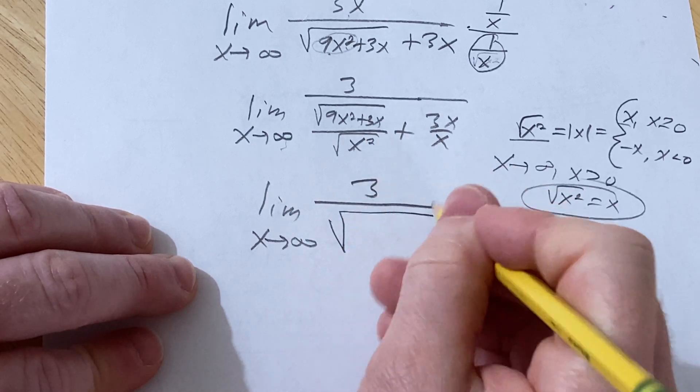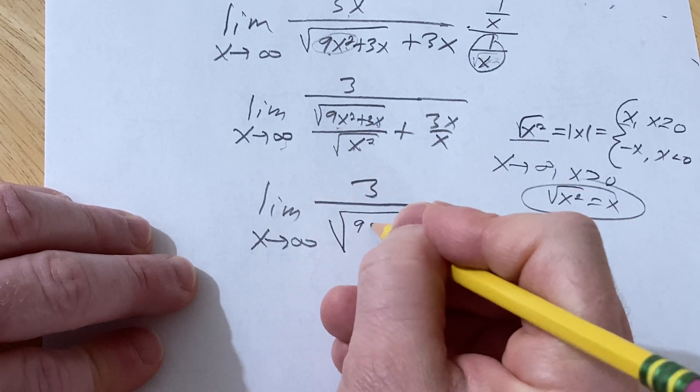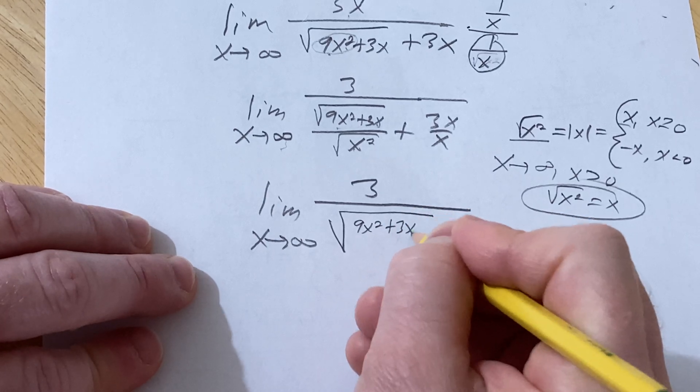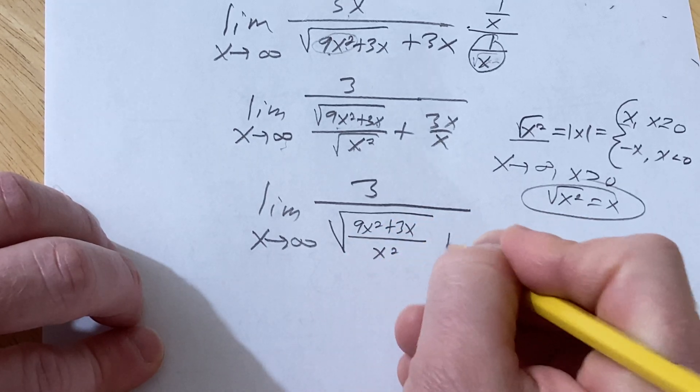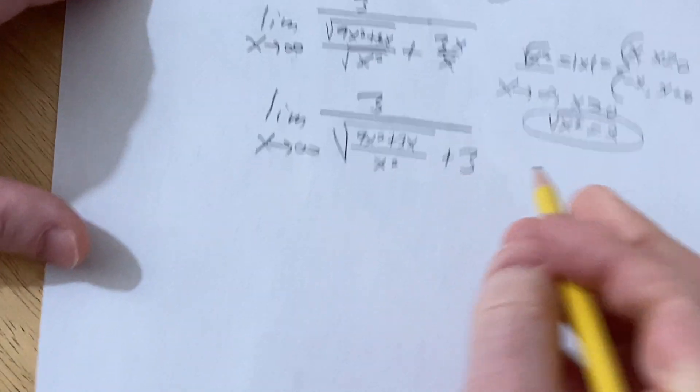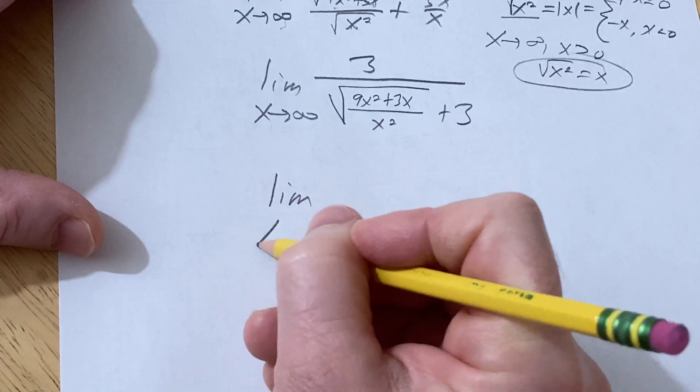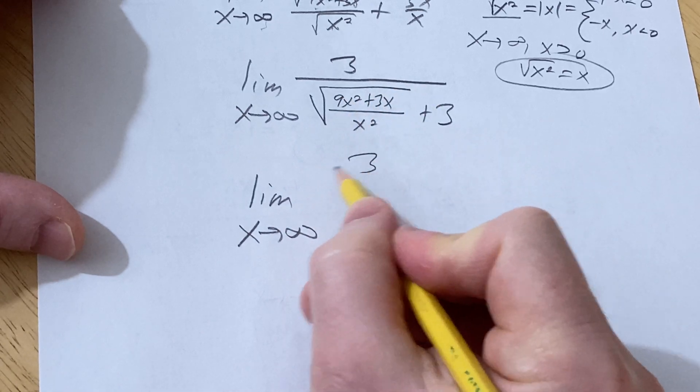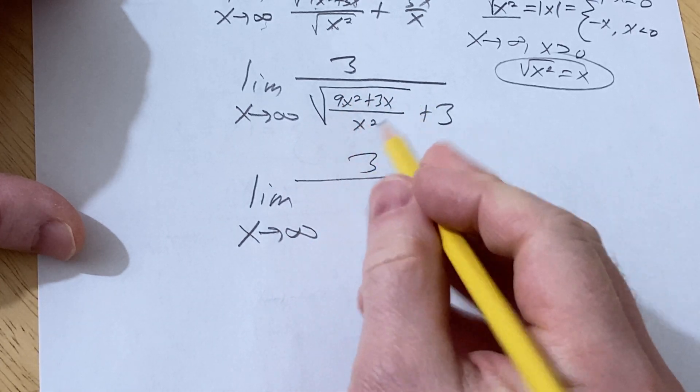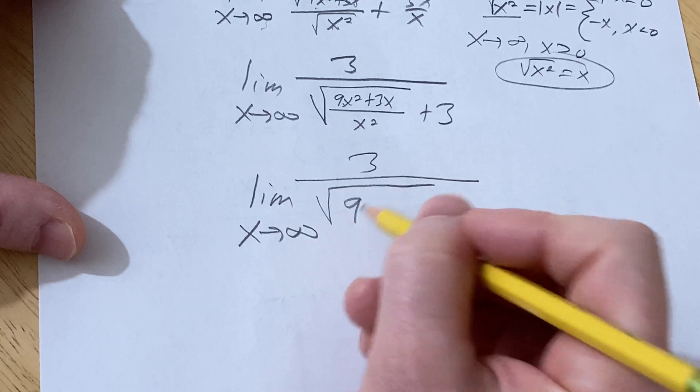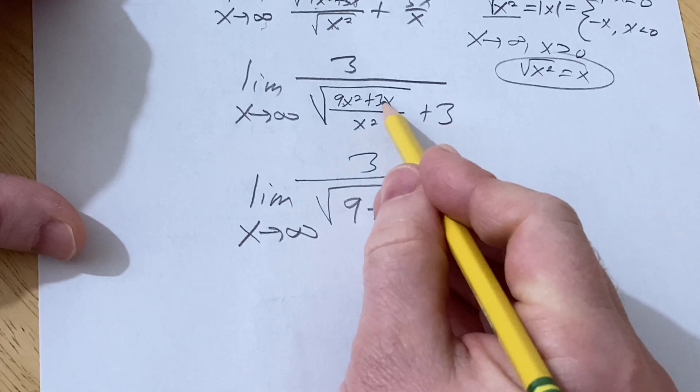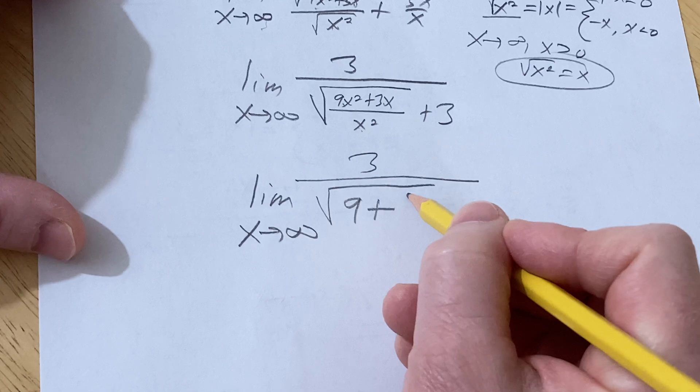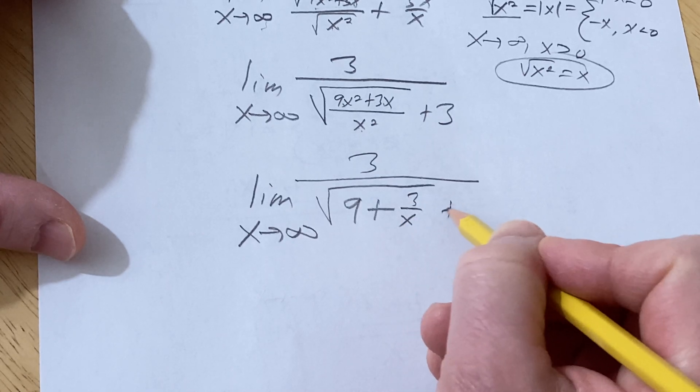So now this is the square root of, so it's this over this. So it's 9x squared over x squared plus 3. This is the limit as x approaches infinity. So 3 over, so now we can break this up. 9x squared over x squared is just 9 plus 3x over x squared is just 3 over x plus 3.